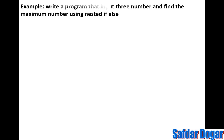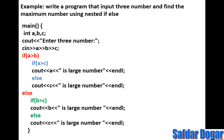Now we will use this in a program. The program is: write a program that inputs three numbers and finds the maximum number using nested if-else. We take three numbers and we have to determine which number is the biggest. We use cout to prompt, then cin to read A, B, and C.